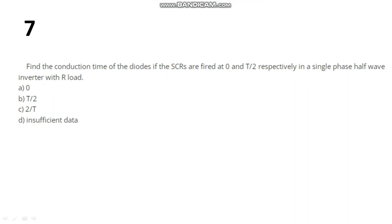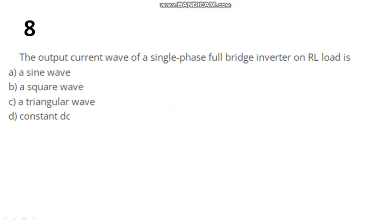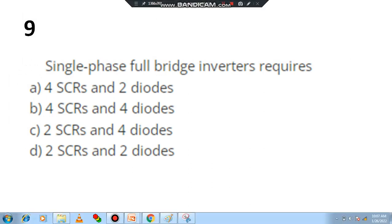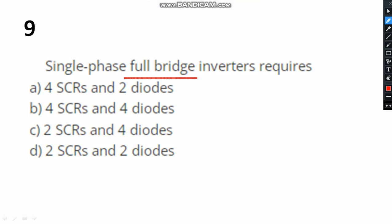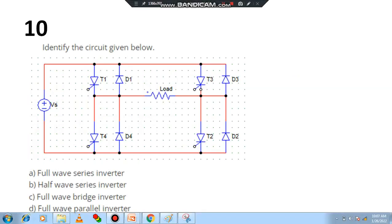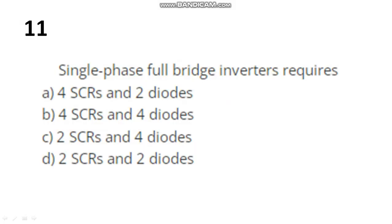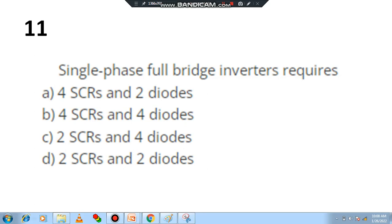Question number 7: find the conduction time of the diode — this has already been discussed. The output current waveform of a single phase full bridge inverter on RL load is a triangular waveform; option C is correct. A single phase full bridge inverter requires 4 power switches (4 SCRs) and 4 diodes for freewheeling action — option B is correct. The last question asks to identify the circuit, which is obviously a full bridge inverter — option C is correct.